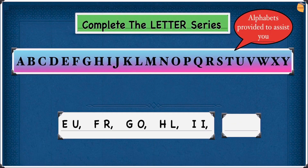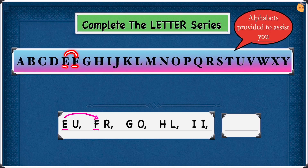Now let's look at this example. Firstly we are going to look at the first letter from each pair. So we're going to look at E and F. We have to see what we need to do to E to get to F. Looking at the alphabet, we have to move one step forward from E to F. So that's going to be plus 1. Write plus 1 here.